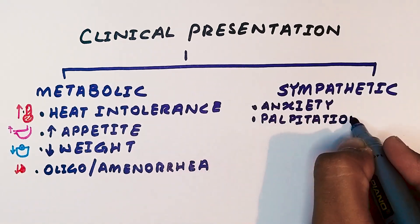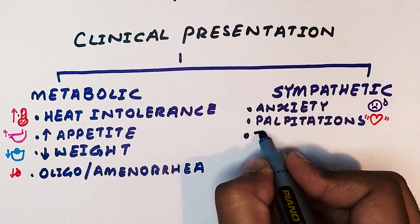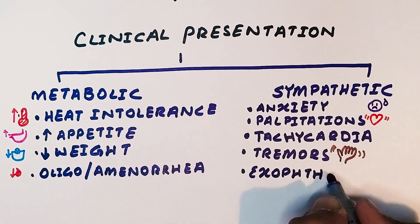The symptoms due to sympathetic overdrive include anxiety, palpitations, tachycardia, tremors, and exophthalmos.